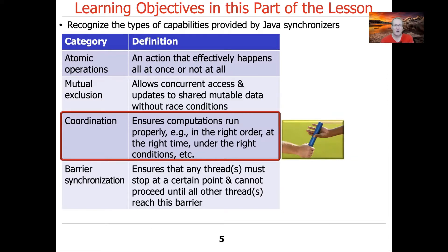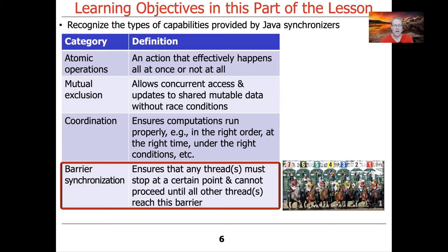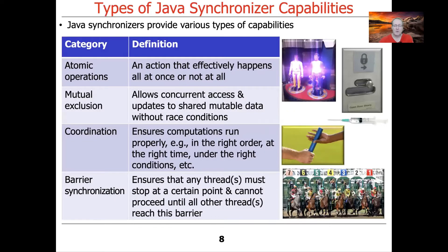The third type of synchronizer category is coordination, which ensures that computations run properly in the right order, at the right time, under the right conditions. The metaphor here is passing of the baton to coordinate actions. The fourth and final category is barrier synchronizers, which ensure that threads stop at a certain point and can't proceed until all other threads have reached the same barrier. A good example is the starting gate for horses at a race, or starting blocks for the 100-meter dash, where everyone starts from a common point when the starting gun fires.